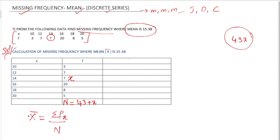Now we need to first multiply f into x. So f into x, you need to multiply: 10 into 3 is 30, 12 into 7 is 84, 14 into x is 14x.